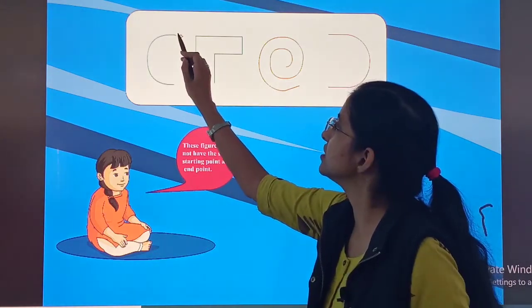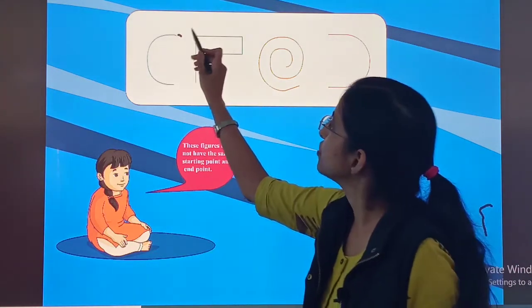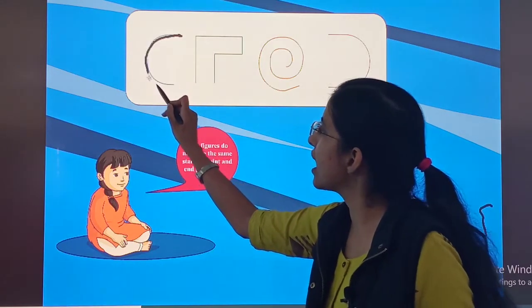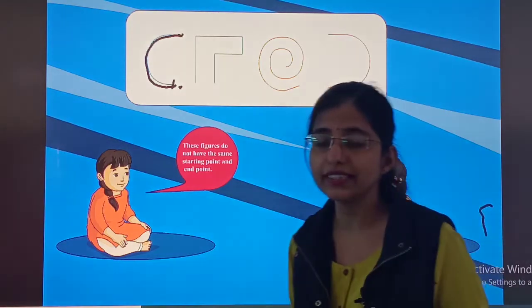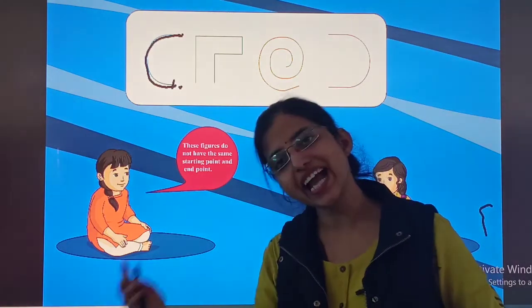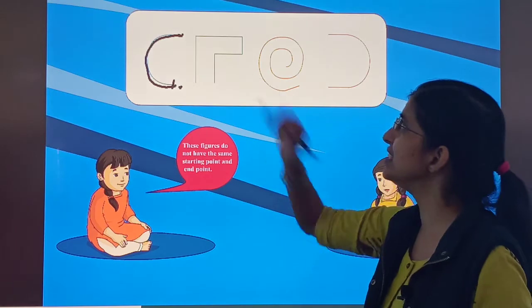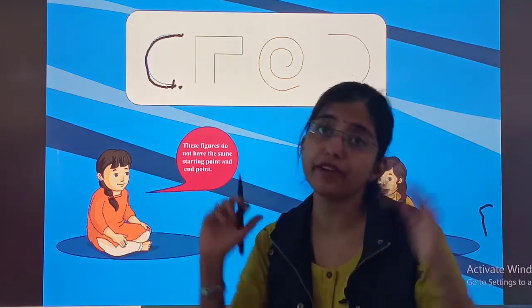First one. This is the starting point, correct? So, starting point and this is my ending point. I have two different points. Starting point is different. Ending point is different. So, these type of figures are open figures.